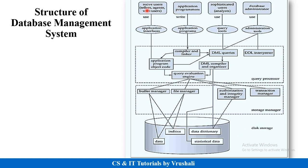The first component is users. Naive users are those of us who simply use particular applications — like WhatsApp or a banking application. Application programmers or developers write the particular code and develop a particular system. Sophisticated users such as data analysts or SQL developers use query tools to generate database queries. And database administrators manage the complete database management system. These are the types of users.